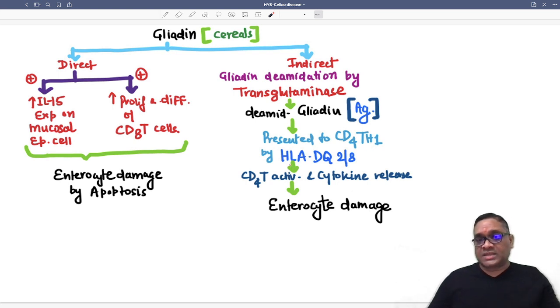By which HLA molecule? Remember HLA-DQ28, which is the HLA marker for celiac disease. This will be presenting antigen and now CD4 T cell is activated, cytokine will be released and now this cytokine is going to cause enterocyte damage. Direct method by IL-15 and CD8, indirect method is by CD4 T cells with their cytokine causing enterocyte damage.